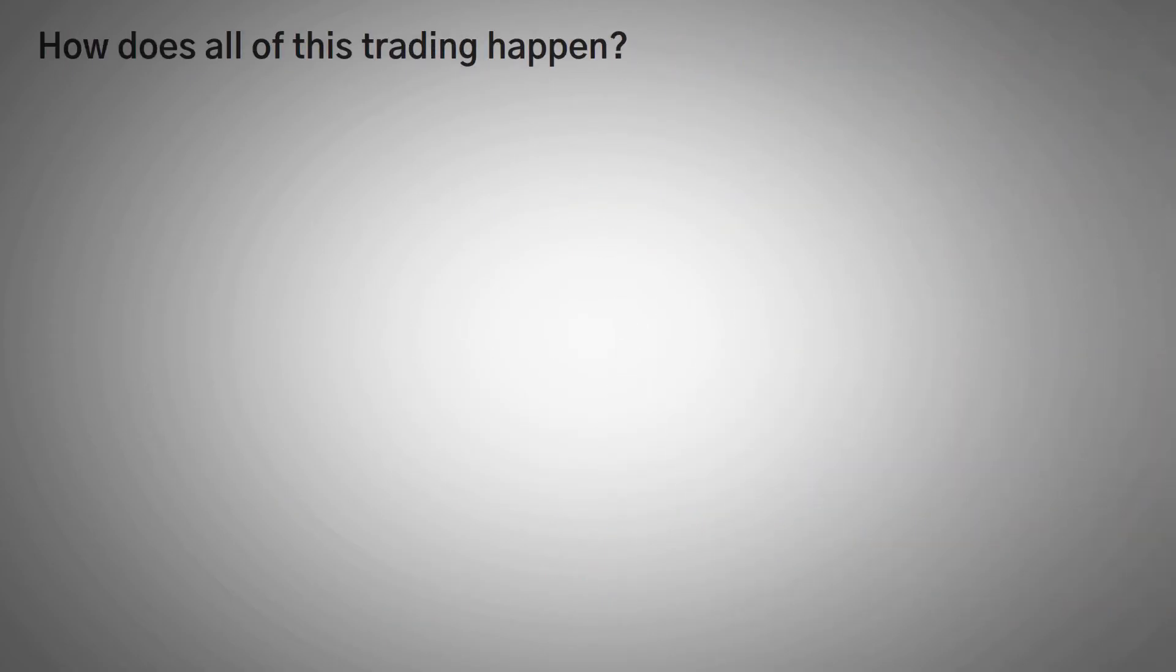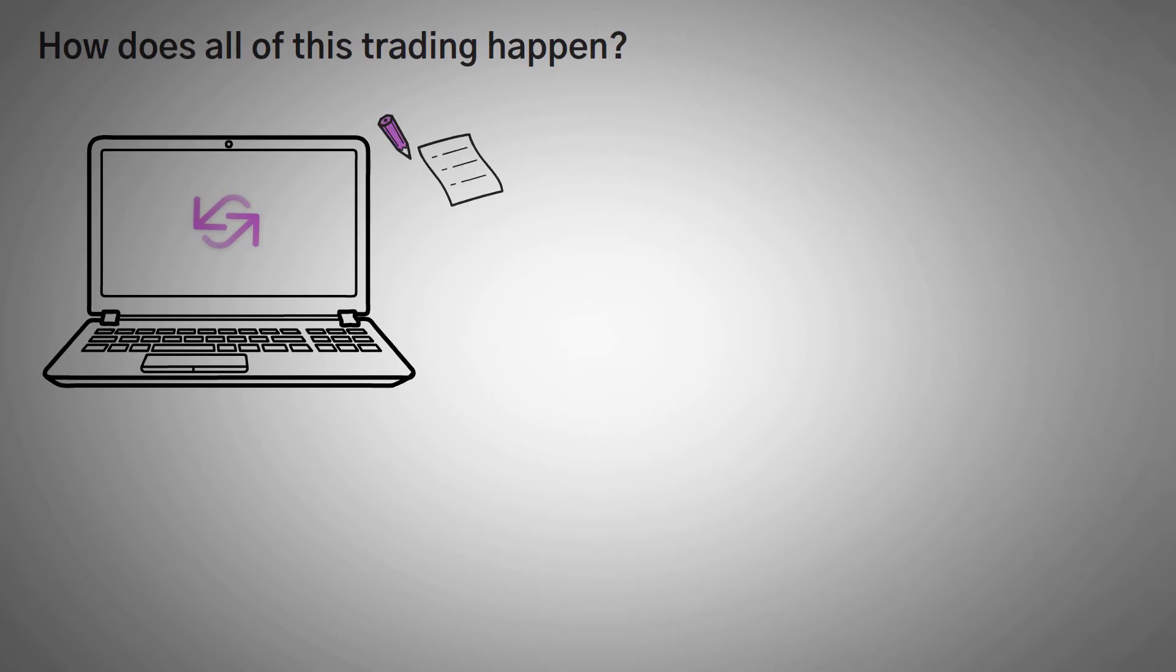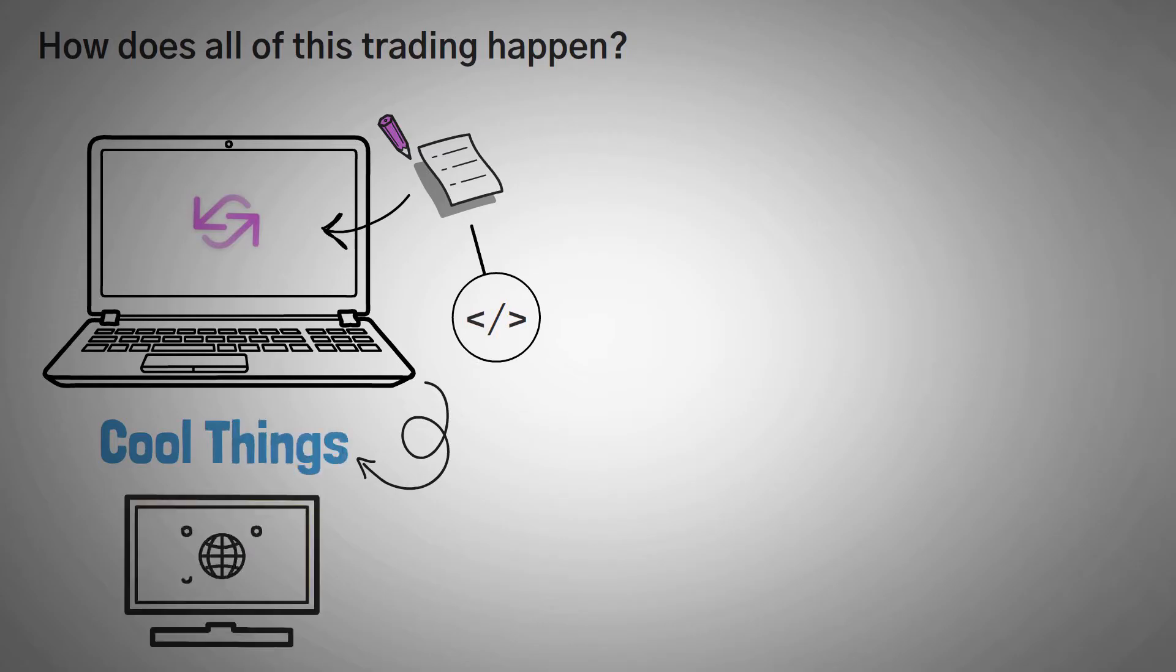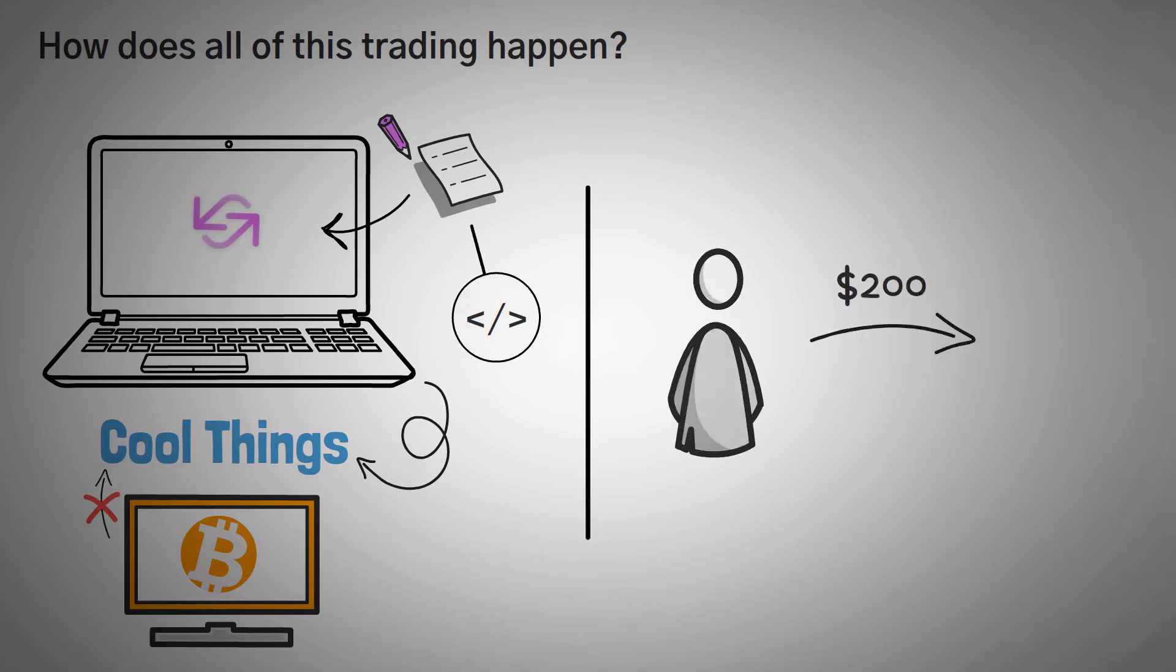So how does all this trading happen? Well, Uniswap was created using smart contracts, which are basically pieces of code that work on the blockchain and allow people to do really cool things that they can't do with the Bitcoin network. For example, in V1, you could give Uniswap $200, and they might give you one Ethereum. After that, you might give them $200 again, and this time they'd give you 0.8 Ethereum. This is because since you bought Ethereum, the price of Ethereum went up, and the pool charged you more for it.